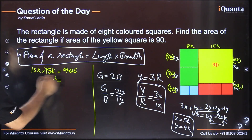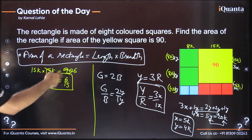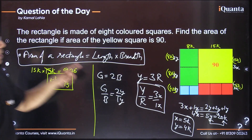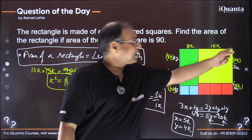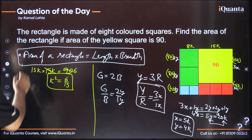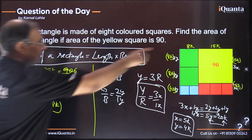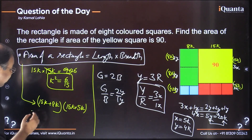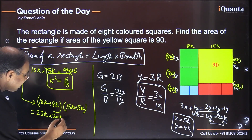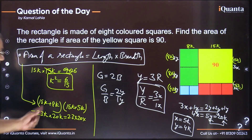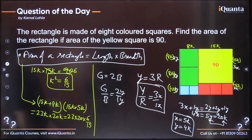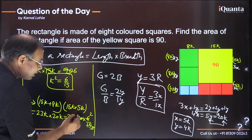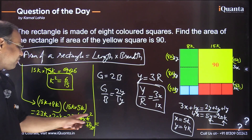From 15k × 15k = 90, we get k² = 90/225 = 6/15. The area of the rectangle is length × breadth = 23k × 20k = 23 × 20 × k² = 460 × (6/15). Simplifying: 460 × 6/15 = 460 × 2/5 = 184. So the area of the rectangle is 184.